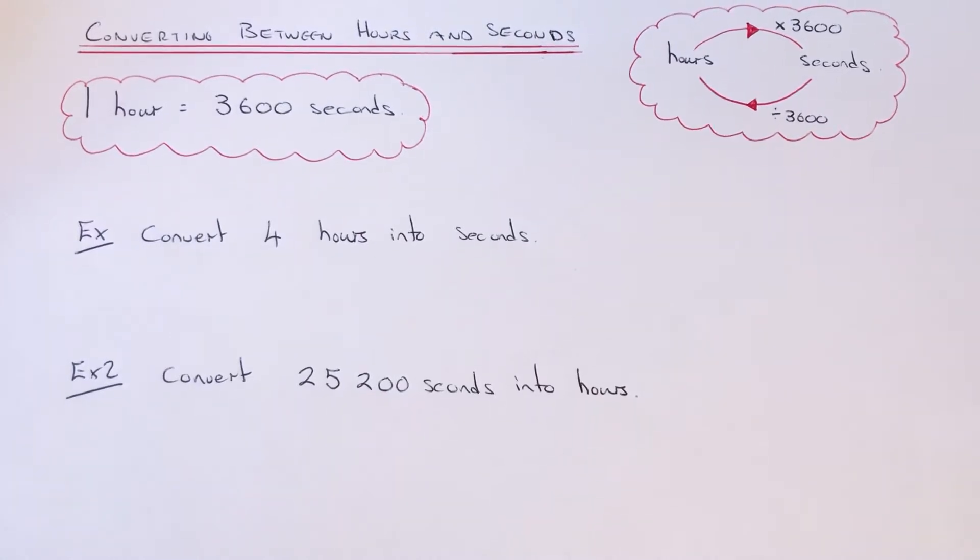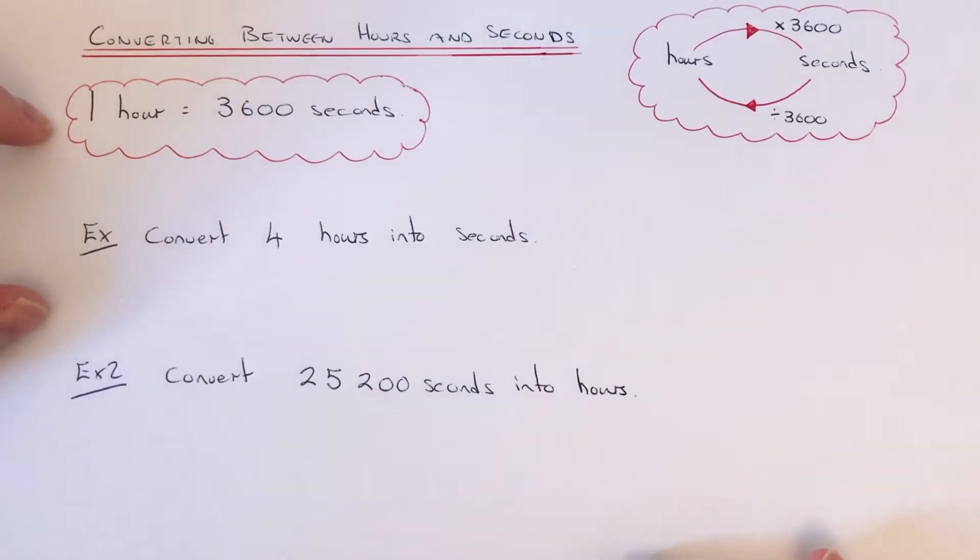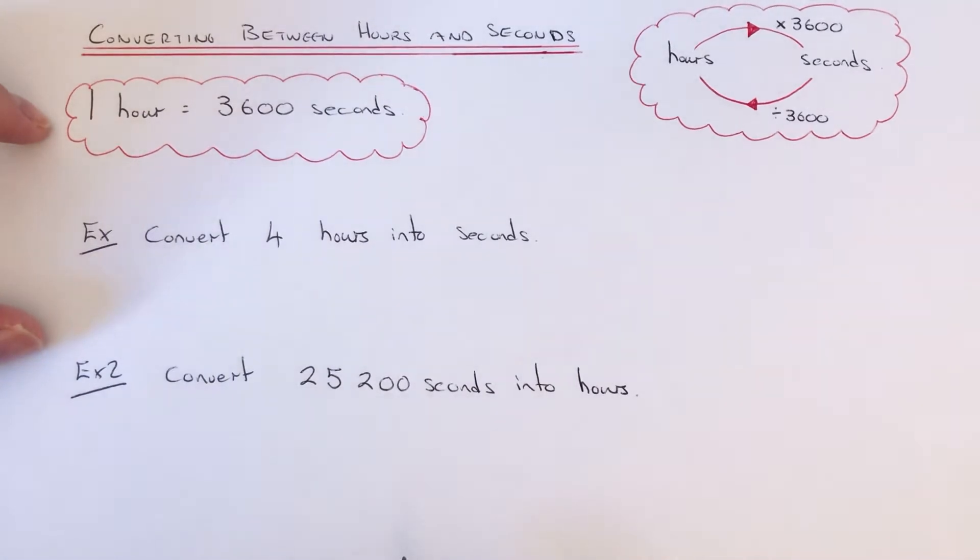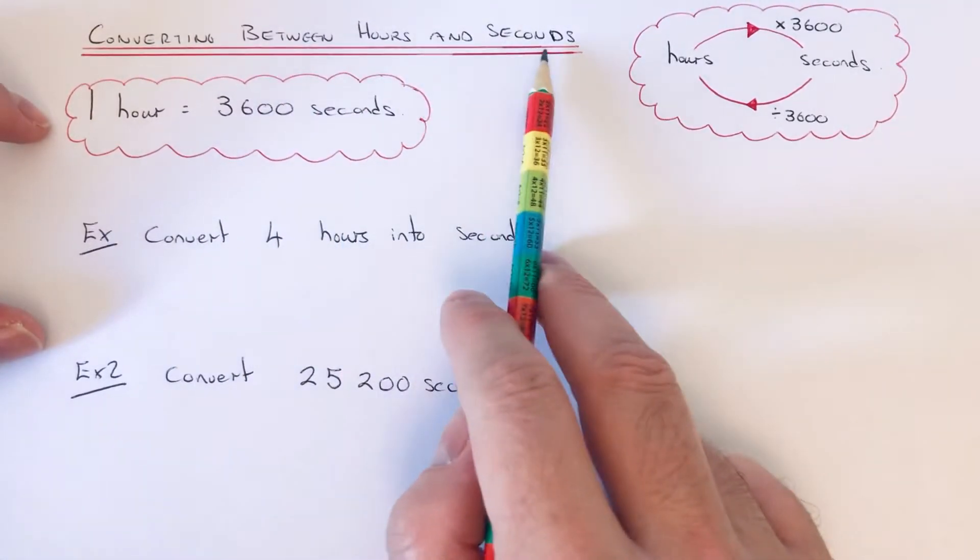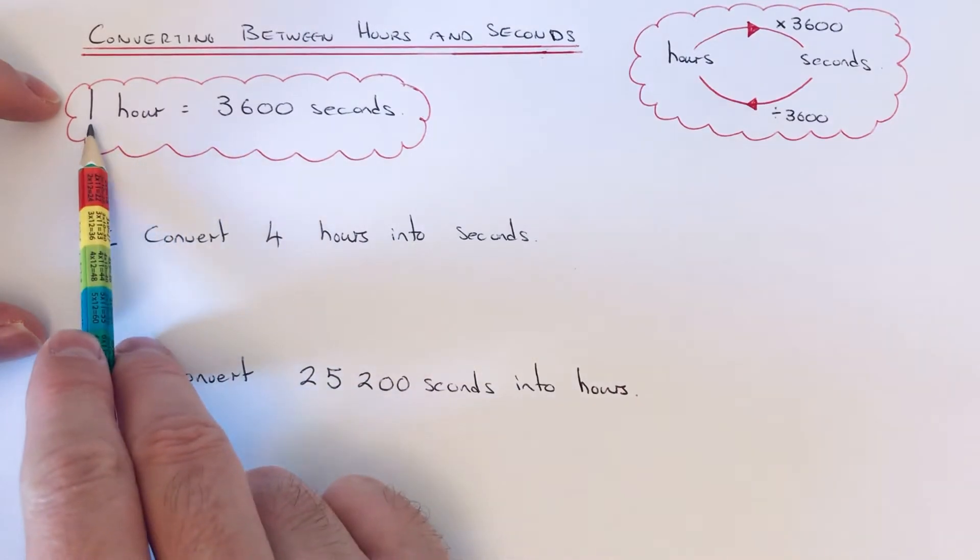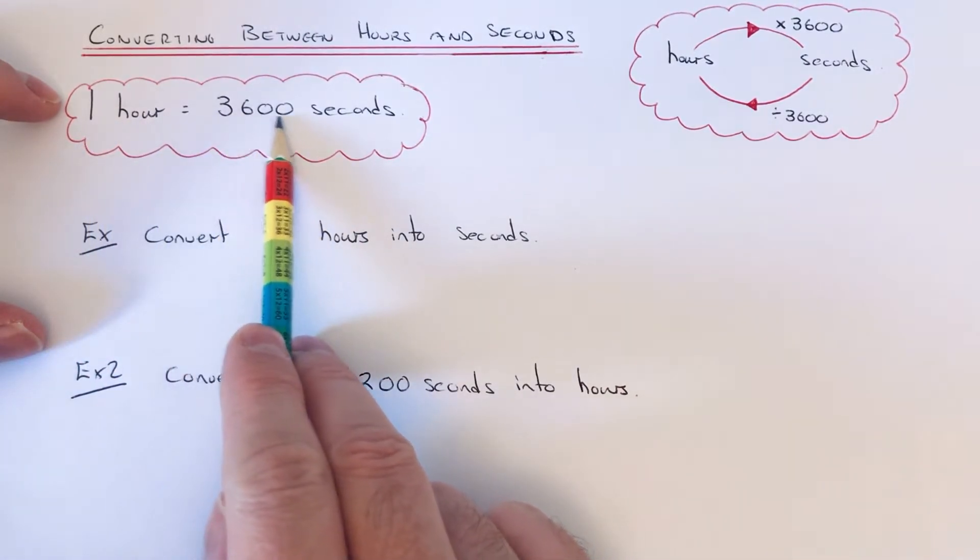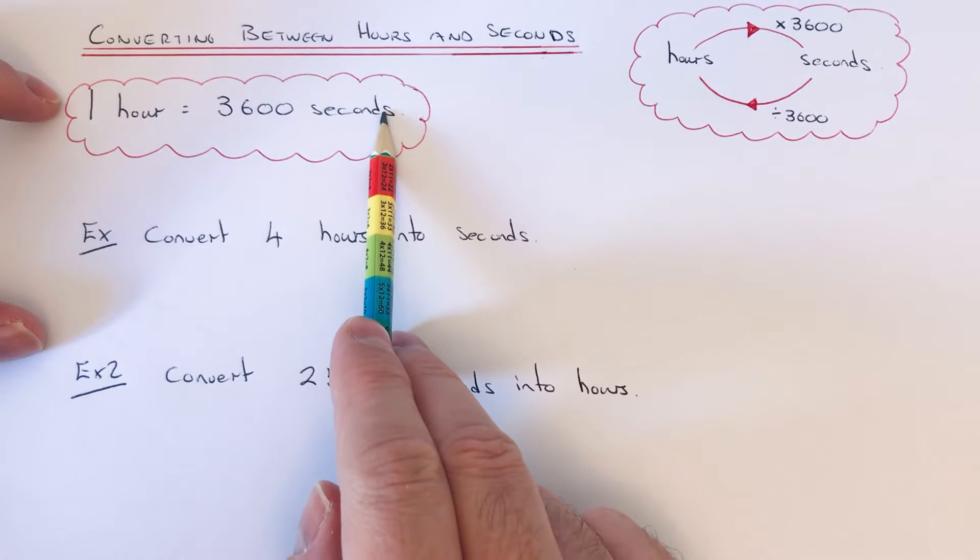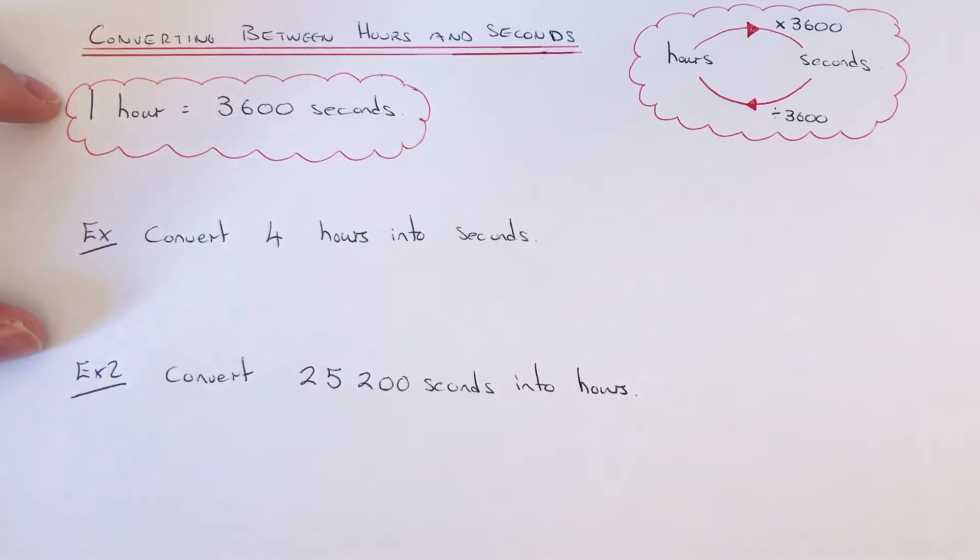Hi guys, welcome back. This is Maths 3000. Today I'm going to show you how to convert between hours and seconds. To do this, you'll need to know that one hour is the same as 3600 seconds. This is because 60 seconds are in one minute and 60 minutes are in an hour, so 60 times 60 is 3600.